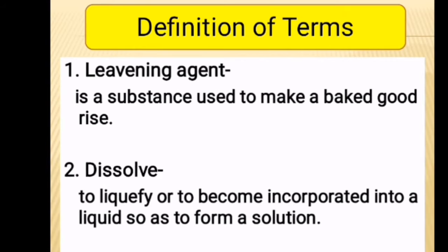Definition of Terms. First, Leavening Agent. A leavening agent is a substance used to make a baked product rise. Number 2, Dissolve. Dissolve means to liquefy or to become incorporated into a liquid so as to form a solution.